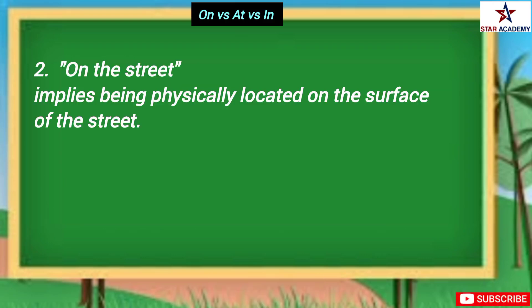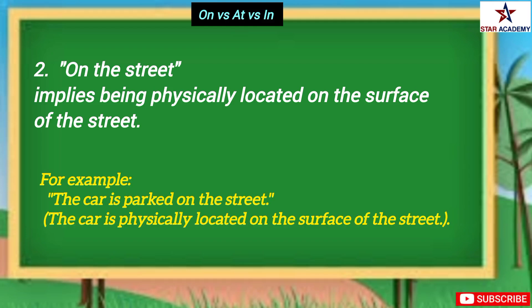In the second case, when we say 'on the street', it implies being physically located on the surface of the street. For example, when we say 'the car is parked on the street', it means the car is physically located on the surface of the street.